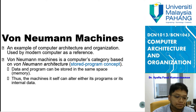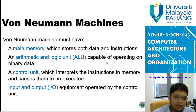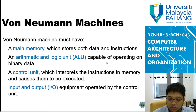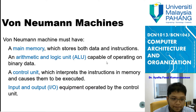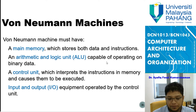The Von Neumann machine is a computer category based on Von Neumann architecture under the stored program concept, meaning data and programs can be stored in the same memory space, allowing the machine to alter its own program or internal data. Inside the Von Neumann machine, there are four essential components: main memory, the arithmetic and logic unit (ALU), the control unit, and input/output equipment. Main memory stores data and instructions; the ALU operates on binary data; the control unit interprets instructions in memory and causes them to be executed; and the input/output equipment is operated by the control unit.